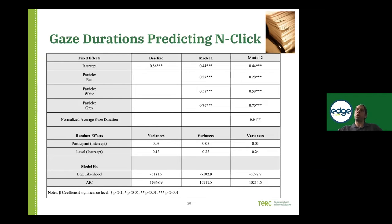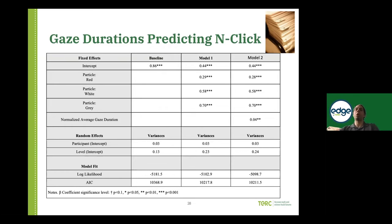Controlling for individual effects, for what level they're at, and for what particle type they're looking at, gaze durations still added additional predictive power over and above these measures. Even when controlling for all these other factors, gazes still provide a statistically significant improvement in estimating which particles they're likely to click on more — and that clicking behavior is associated with their understanding of physics, as we've seen in prior work.